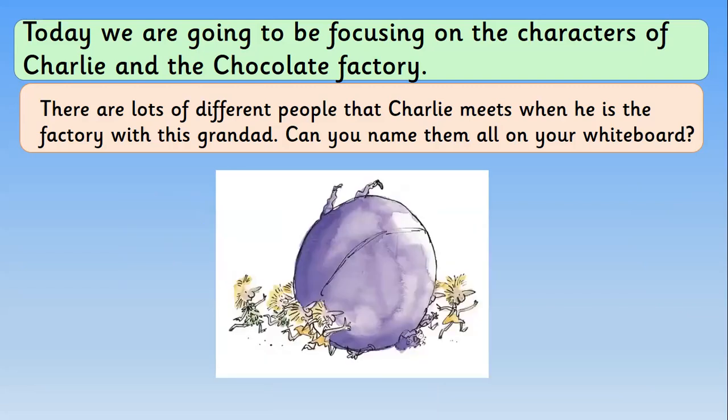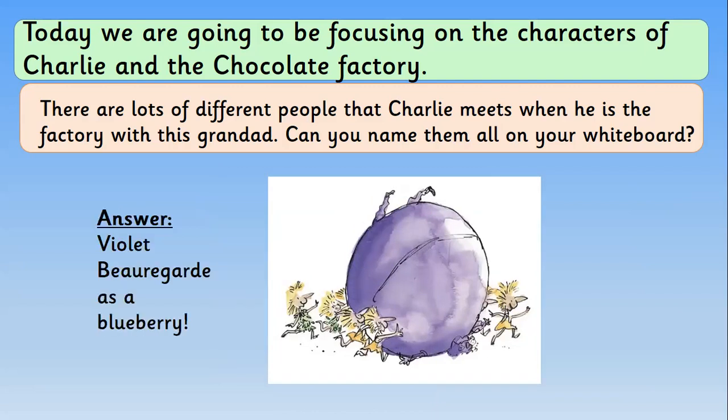Here's the next one. Can you remember her name? She liked to chew bubblegum, and something happens to her where she ends up turning into a blueberry. Can you remember her name? Well done — it's Violet Beauregard as a blueberry! And in that picture, Quentin Blake has drawn the Oompa Loompas rolling her away.